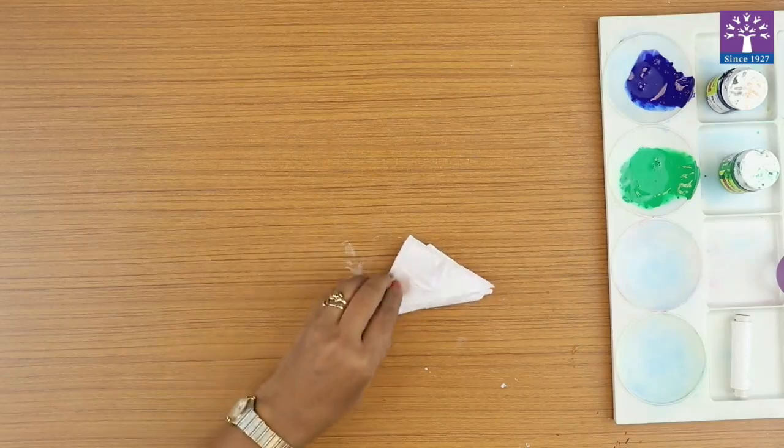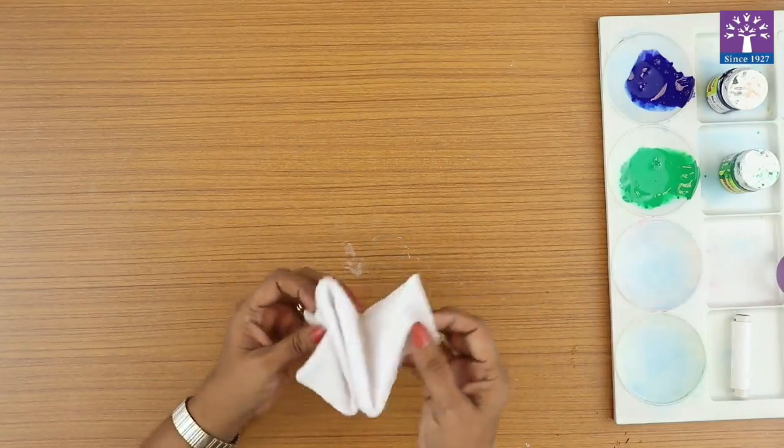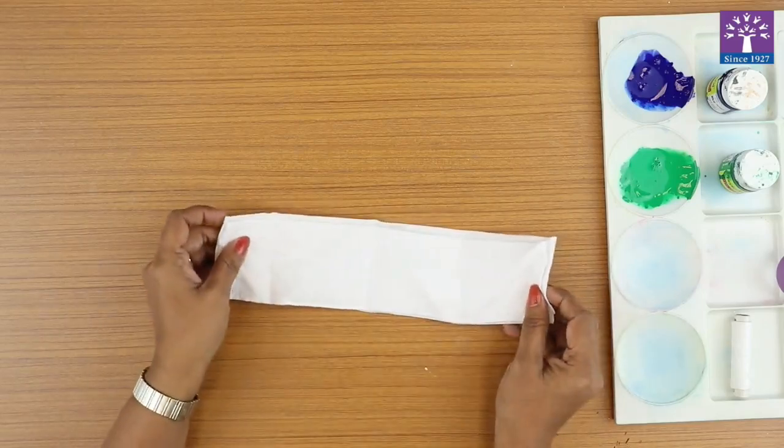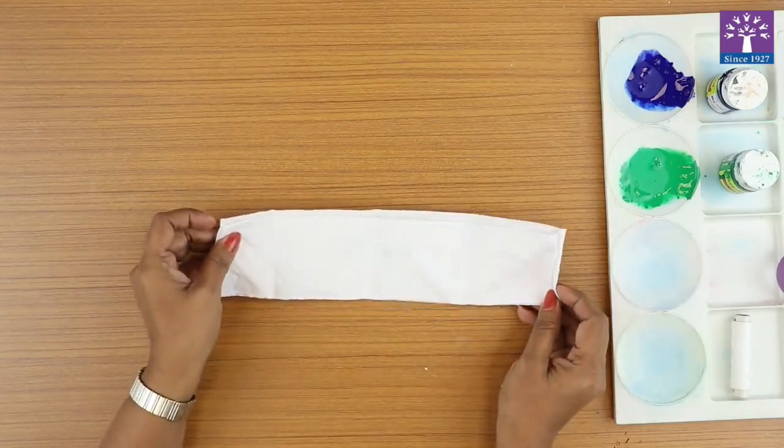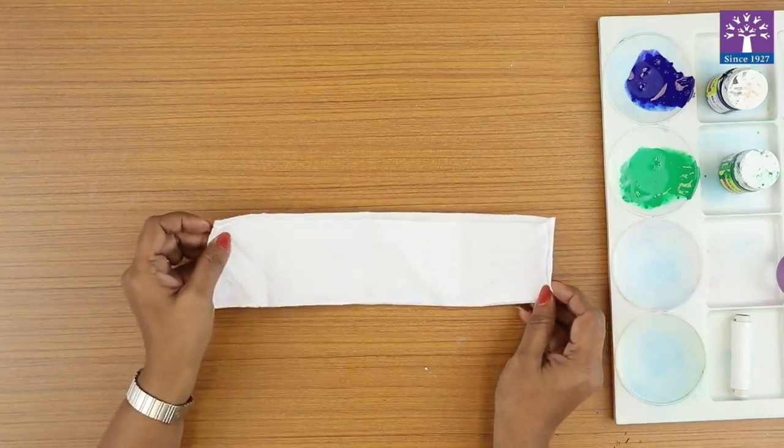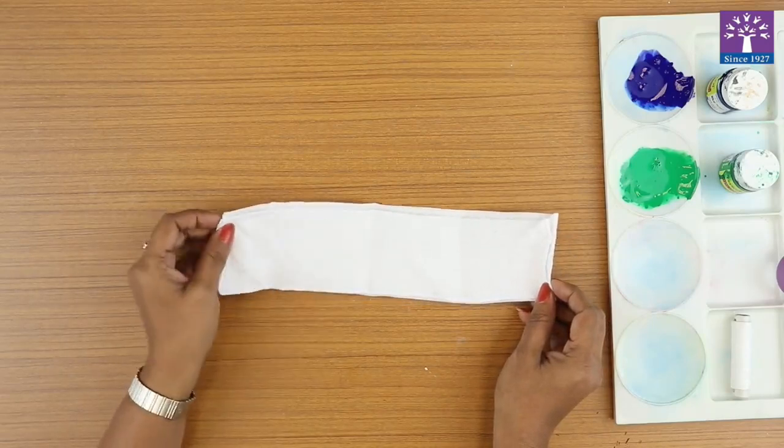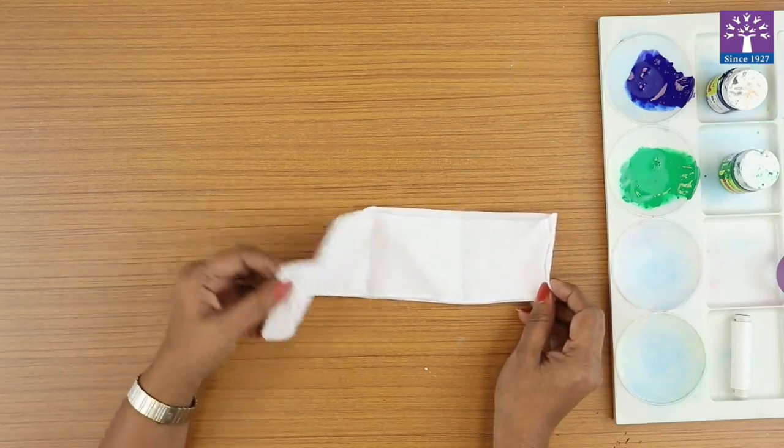This is the first folding technique of the tie and dye. I'm showing this to you on a dry piece of kerchief first because we are going to wet the cloth then use the same folding technique, but it will be difficult for you to see it on a wet cloth.